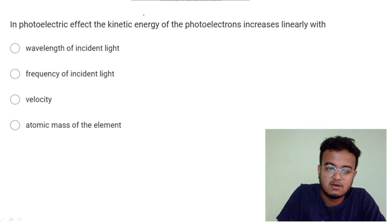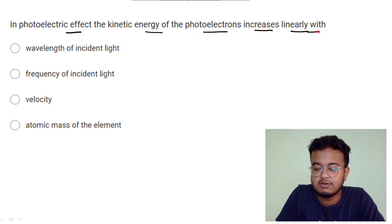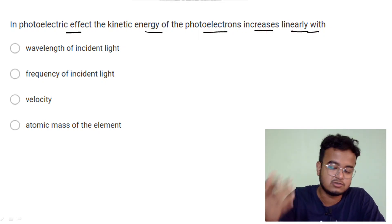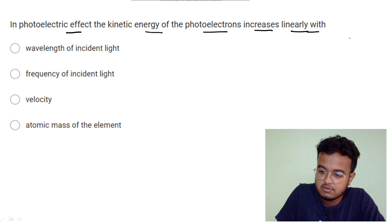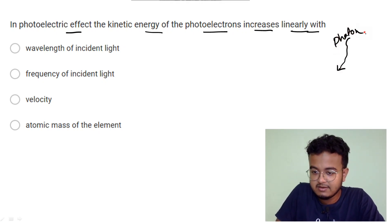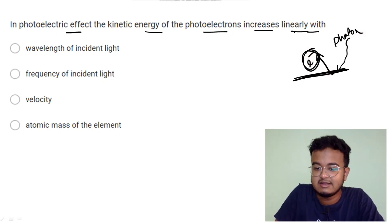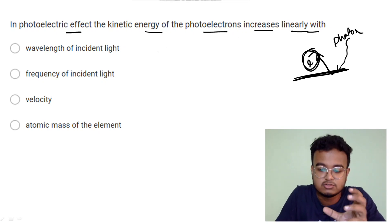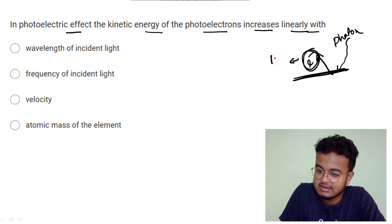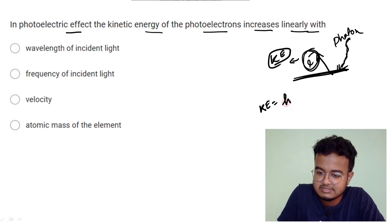First question: the photoelectric effect. Kinetic energy of photoelectron increases linearly with what? The question involves a photon or a metal plate — what is the kinetic energy of the electron? So, the electron kinetic energy formula is what? The photon energy is hν.